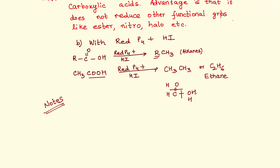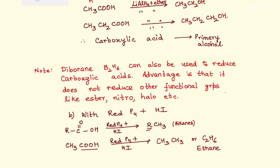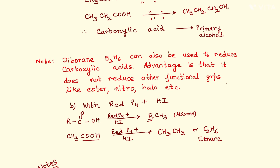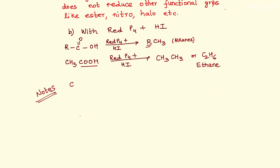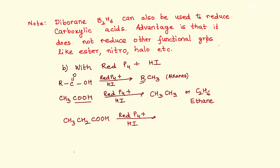Now going back to our earlier example: CH3CH2COOH treated with red phosphorus and HI — what do you get? Write down the product and keep it ready, because I will give you the answer later in the video.